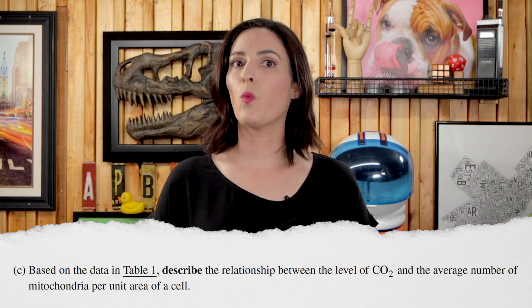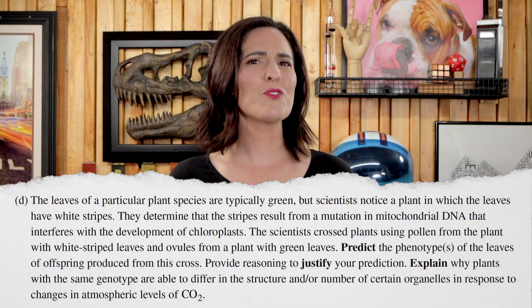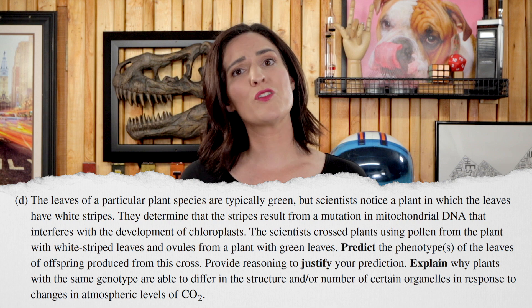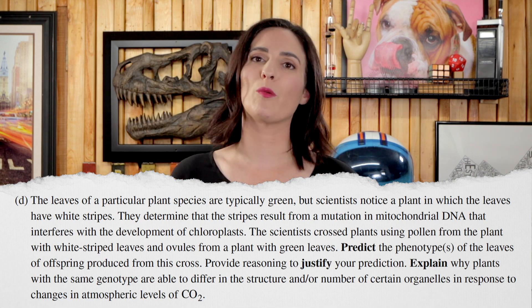In Part C, earn one point for saying that there is a direct and/or positive relationship between higher CO2 levels and the average number of mitochondria. In Part D, all of the offspring should have green leaves because mitochondrial DNA is inherited through the egg or ovule of the plant and not the sperm or pollen. And you can have different phenotypes with the same genotype because organisms respond to their environment with differential gene expression. This is known as phenotypic plasticity. That's nine points total for question two.